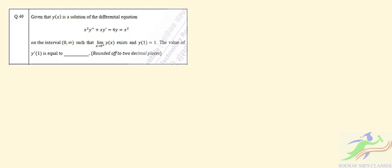This is question number 49 from the 2022 JAM paper in mathematics. y(x) is the solution of the given differential equation on the interval 0 to infinity, such that the limit as x approaches 0 plus of y(x) exists, and y(1) = 1. We have to find the value of y'(1), that is the first derivative at x equal to 1.